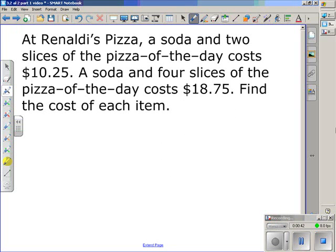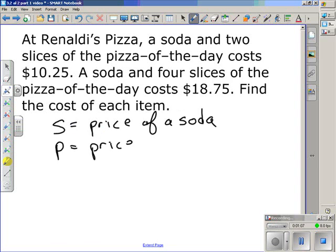To do this, you need to identify the variables. To identify the variables in this problem, we should look at what's in question, what we don't know the prices of. We do not know the price of a soda, so I'm going to define S as the price of a soda. And P, we do not know the price of one slice of pizza, so P is going to be the price for a slice.